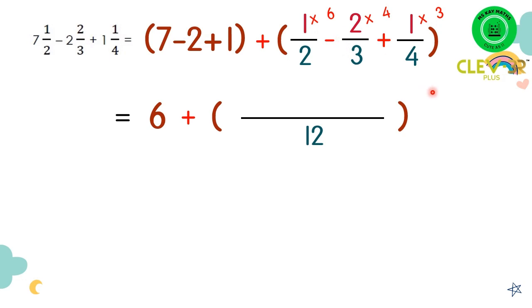All right, so we have 6 minus 8 plus 3. Now 6 minus 8, we cannot have the answer. Tak cukup, so we have to borrow from the side. So 6 becomes 5.